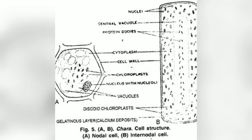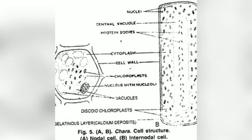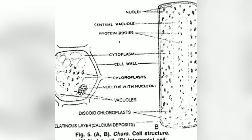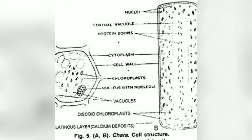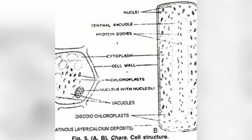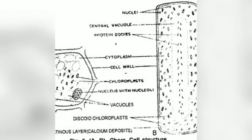Talking about reproduction: Chara reproduces by two modes of reproduction — vegetative method and sexual method.